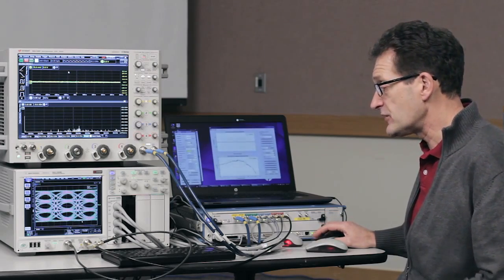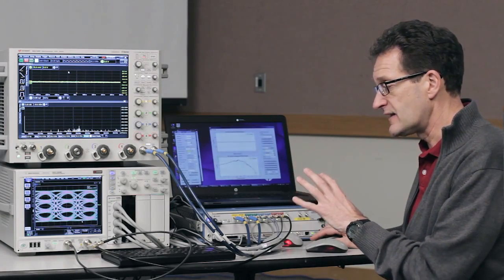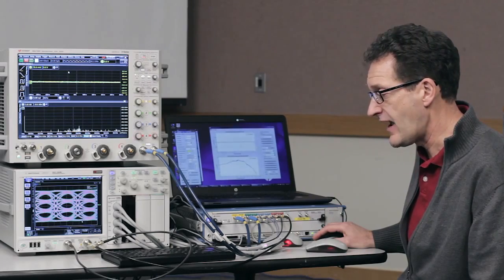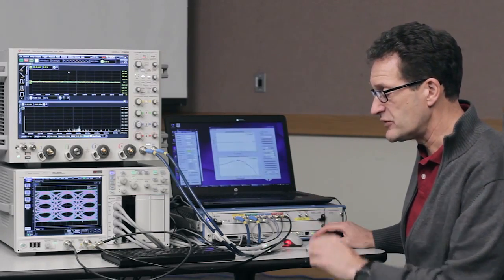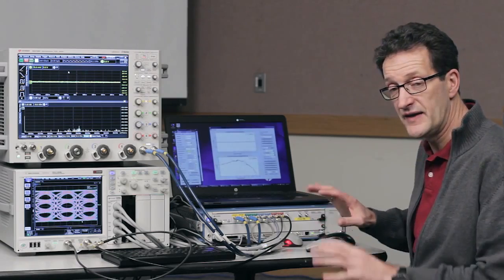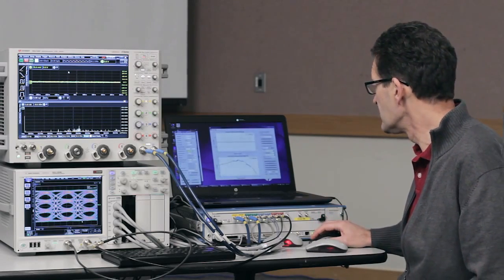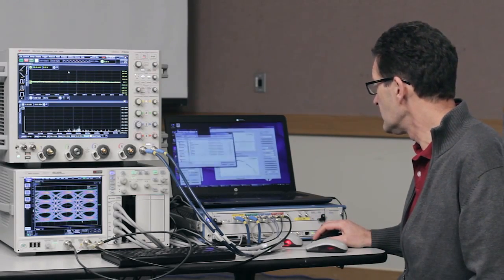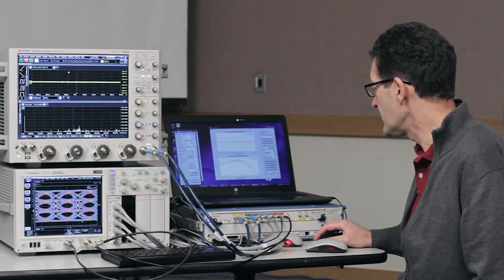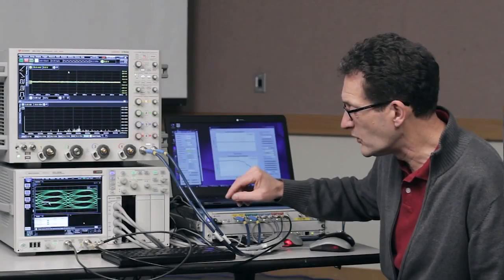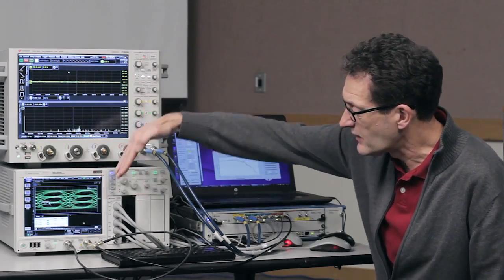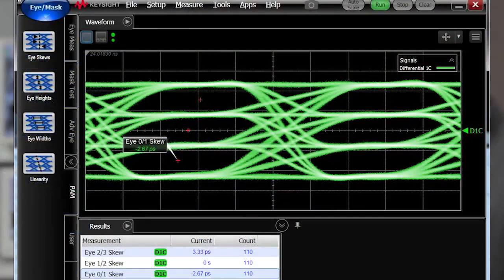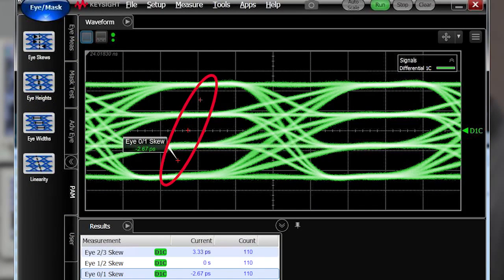As the last measurement, I also wanted to show you some effect that some of the PAM4 signals have and with this AWG, you can emulate those effects as well. And that is skewed eyes. So I will load my skewed eye setup and I will show you that as well. At this point, you can see the eyes are artificially skewed. So the top eye is shifted to the right and the bottom eye is shifted to the left relative to the center eye. The eyes are shifted by approximately two and a half, three picoseconds.